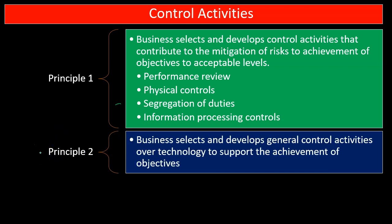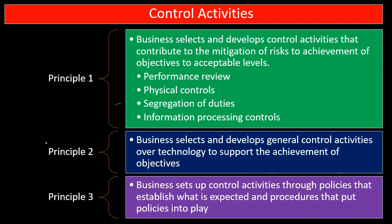Principle number two: the business selects and develops general control activities over technology to support the achievement of objectives. Once we have the control activities set up, we'll likely need a database program as part of our internal controls. That allows us to implement things like separation of duties and performance reviews through the database, requiring IT professionals to help restrict and assign access to different individuals.